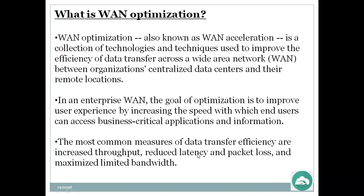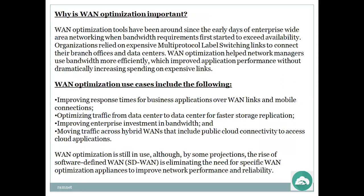The most common measures of data transfer efficiency are: increased throughput, reduced latency and packet loss, and maximized limited bandwidth. WAN optimization uses accelerating techniques to make data transfer very quickly between data centers, data center to cloud, and cloud to endpoint.